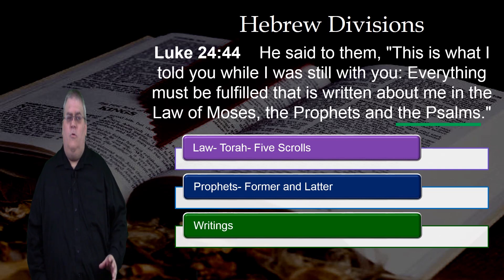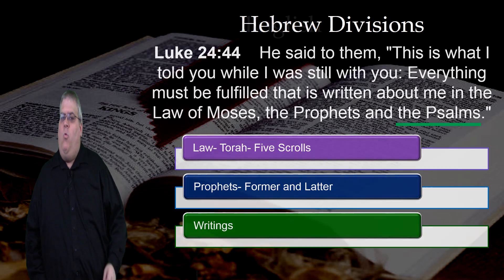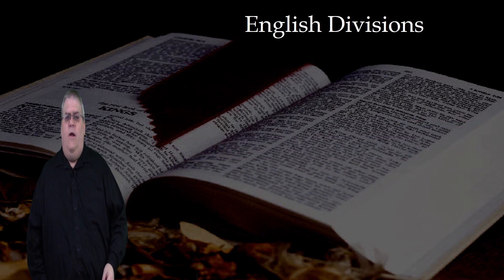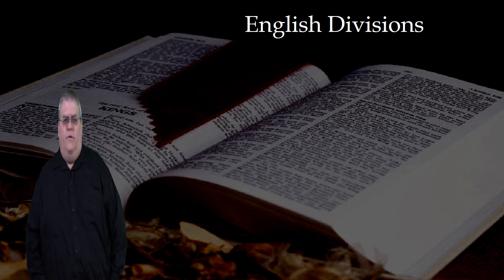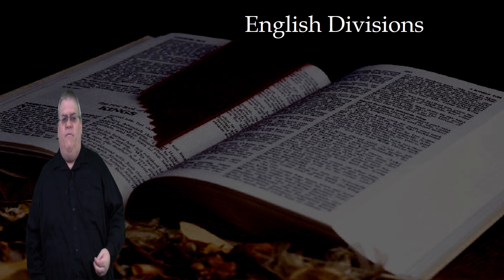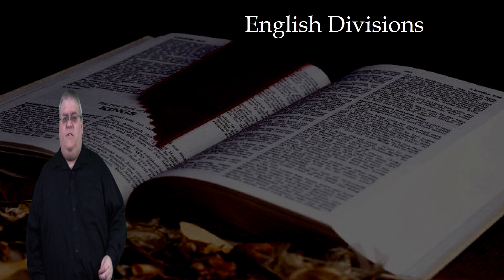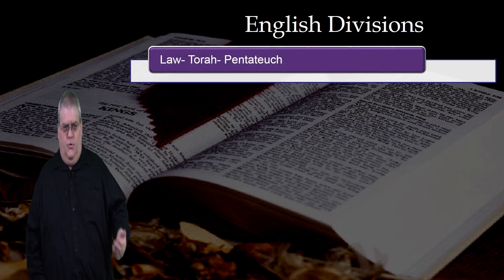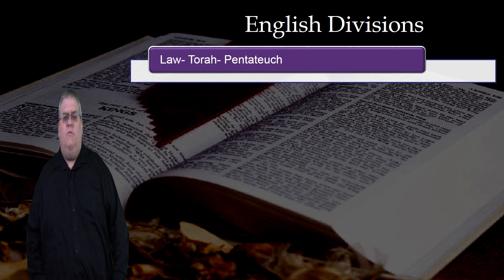This is how the Old Testament literature is organized in the Hebrew Bible. But we're going to concentrate on the divisions in the English Old Testament that we use all the time. This has the same books, just in a slightly different order and organized in a different way. The first division is the same — the Law, also known as the Torah or the Pentateuch, which contains the five books of Moses.